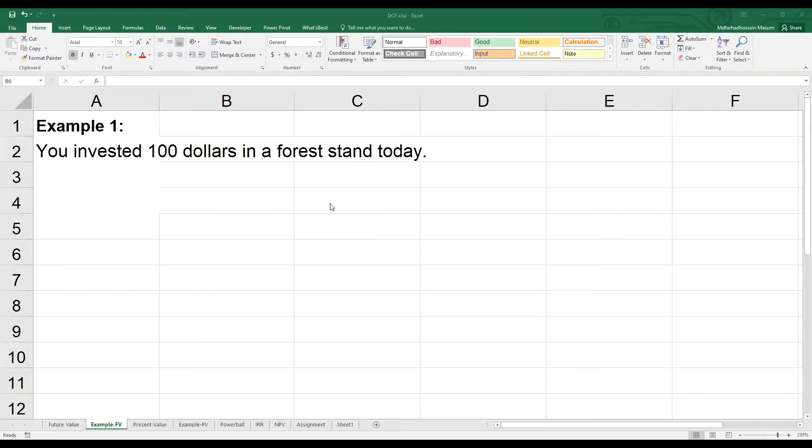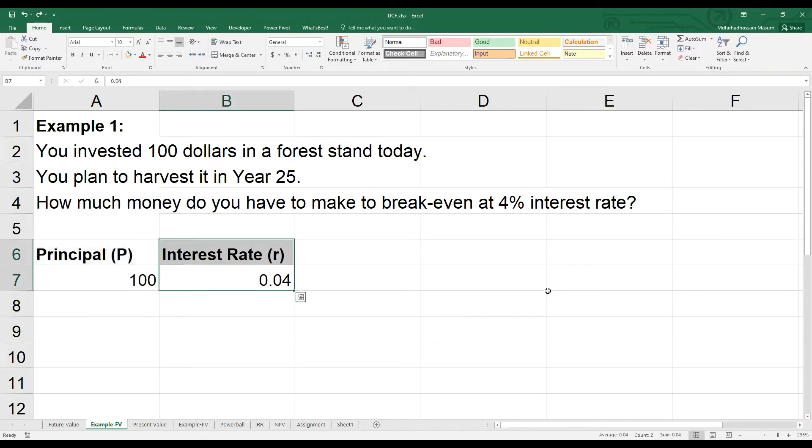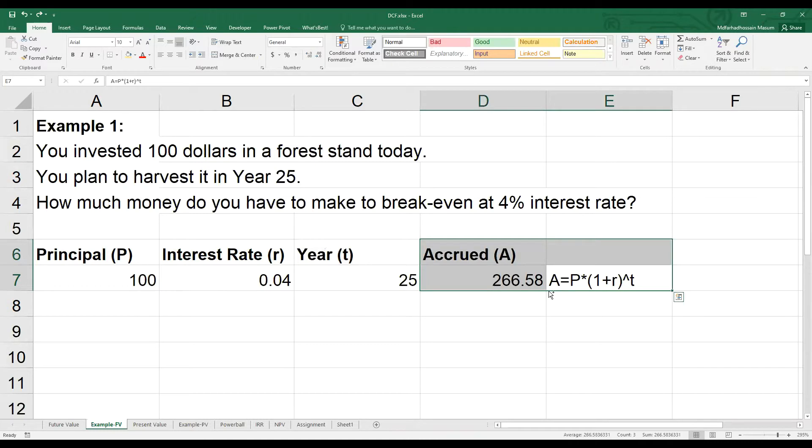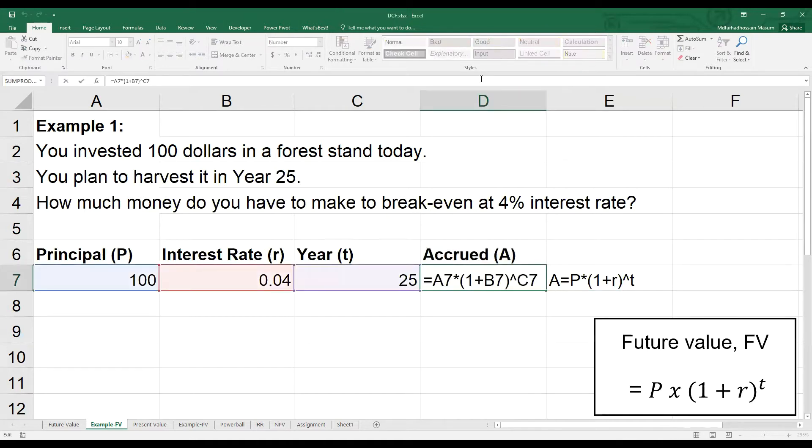Let's look at some forestry examples. Example 1. You invested $100 in a forest stand today and you plan to harvest the forest in year 25. How much money do you have to make to break even at 4% interest rate? Your P is 100, R is 0.04 and T is 25. You want to know how much money you need from the future such that there is no loss or no profit. In other words, break even. Simple. You know the future value formula. Plug P, R and T and voila, you need about $267.